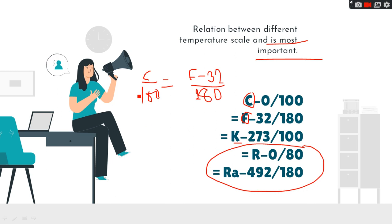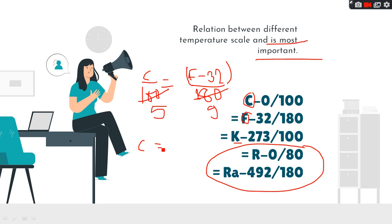You can simplify 100 and 180 by cancelling — it becomes 5 and 9 — so you can directly get Celsius from Fahrenheit by multiplying by 5 and dividing by 9. For Celsius and Kelvin, the denominators are both 100 so they cancel, and it comes to K − 273 = C. This way you can convert temperatures between different scales.